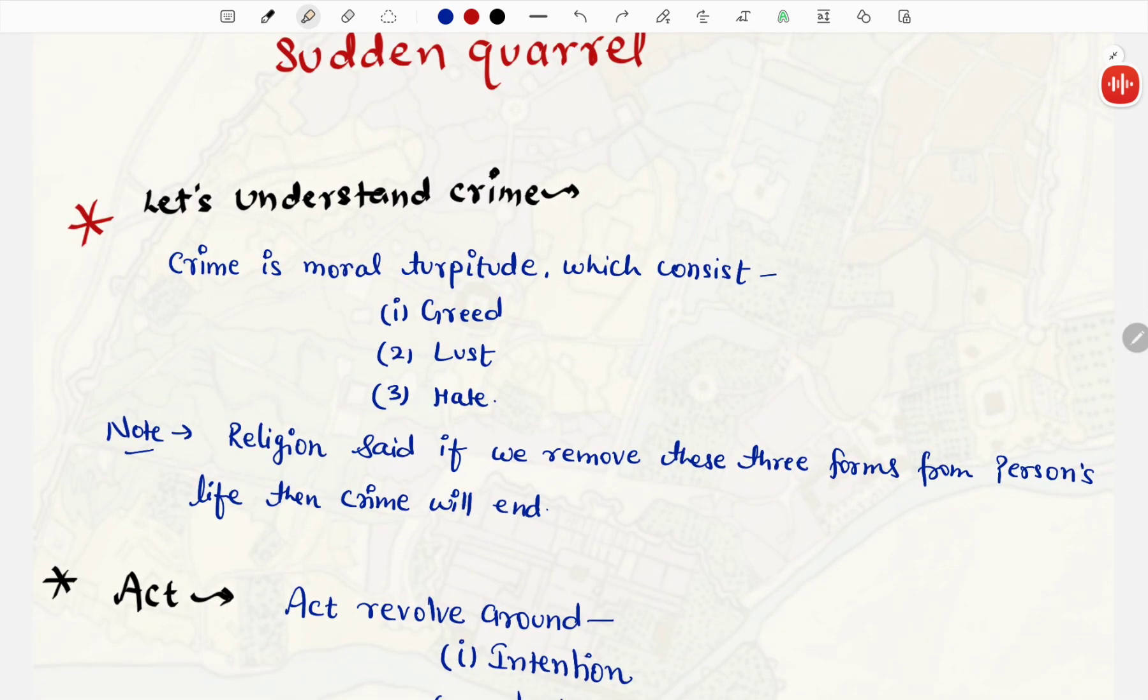Now again, come back to crime. Let's understand the crime. Crime is moral turpitude, which consists greed, lust, and hate. Teen chize hoti hai crime ke under. Greed, lust, and hate. Hamara religion kya bolta hai? Religion said, if we remove these three forms from person's life, then crime will end. Crime ko end karne ke liye, religion kya karta hai? Ki greed, lust, hate ko delete kar do. Crime khatam ho jayega.